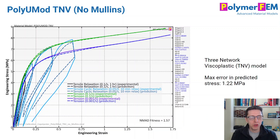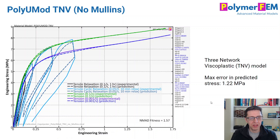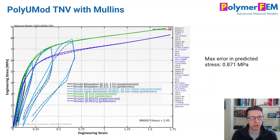We can do even better by switching to the TNV model — the Three Network Viscoplastic model — also part of the PolyUMod library. The average fitness is 1.57%. If I also activate the Mullins effect with this model, I get an average error of 1.45% and a maximum error of 0.87 MPa. It looks really good. This is in fact the best model I found in this exercise and will be the winner.